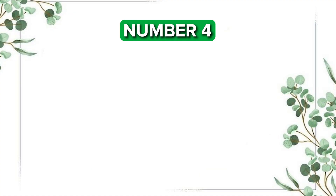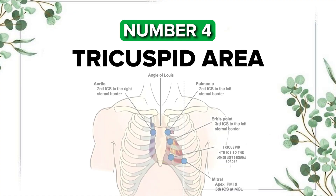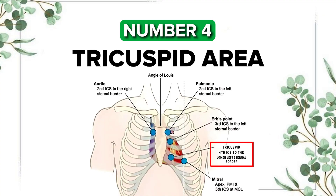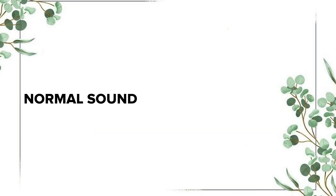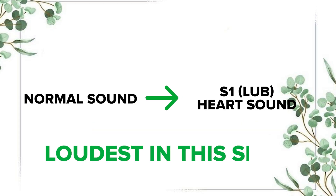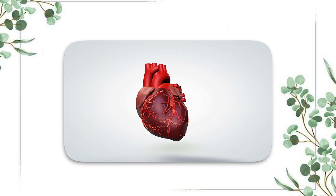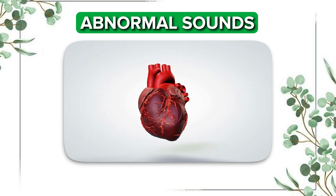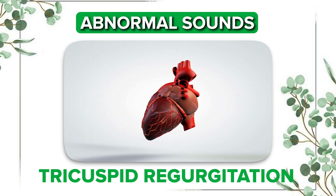The fourth spot is the tricuspid area, usually located at the fourth left intercostal space, left sternal border. This is the place to hear the tricuspid valve. The normal sound here is S1 or 'lub,' which is the loudest at this spot. Abnormal sounds include tricuspid regurgitation, which refers to blood flowing backward, and associated murmurs.